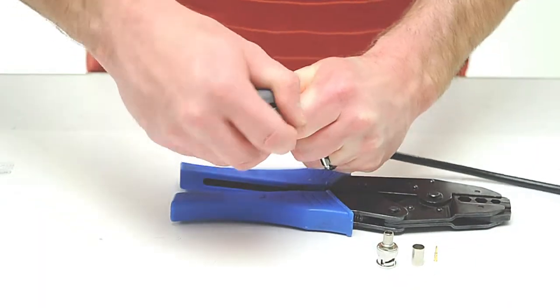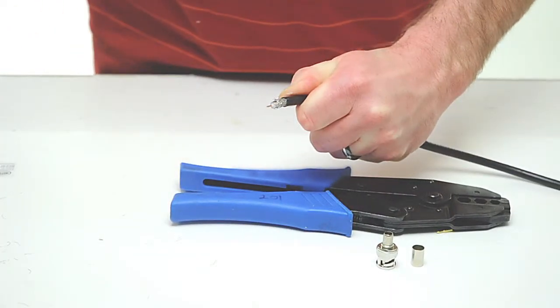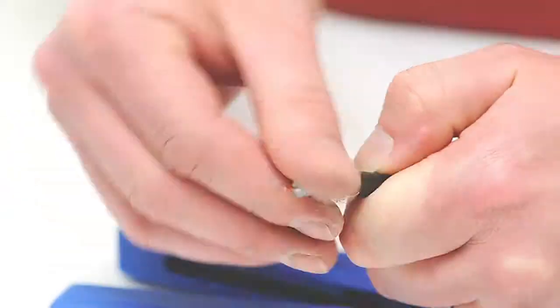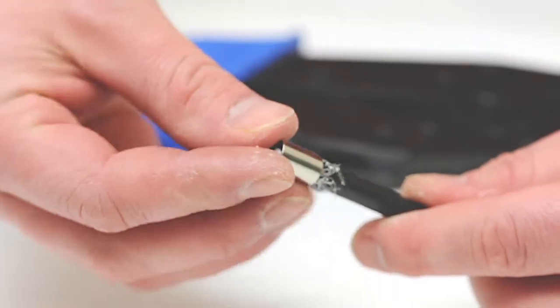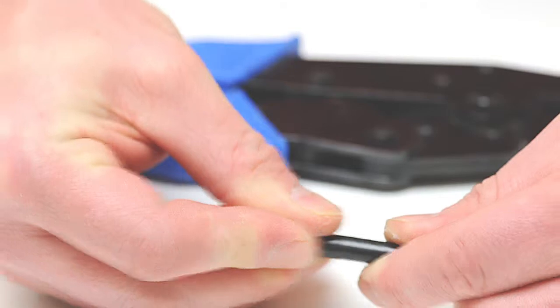Rotate the tool a few times around the outside of the cable and peel the jacket off. Pull the braided shield on top of the jacket and slide the ferrule over the braid and the jacket.